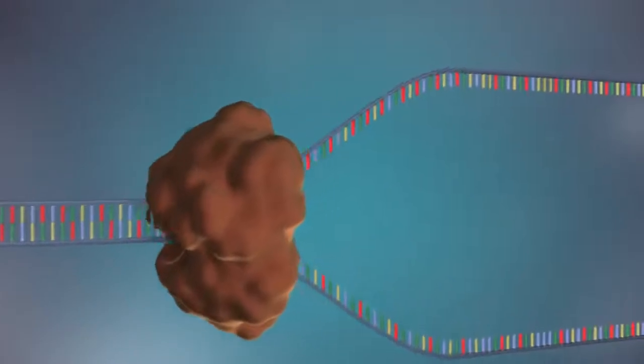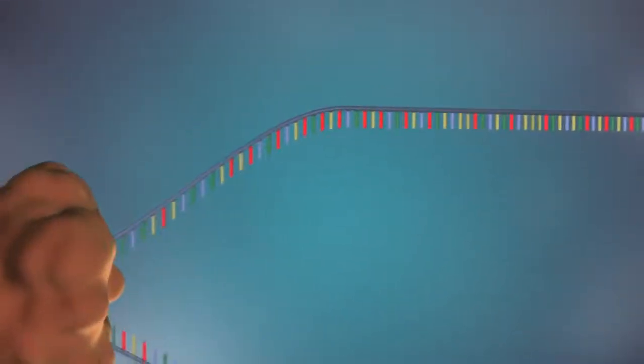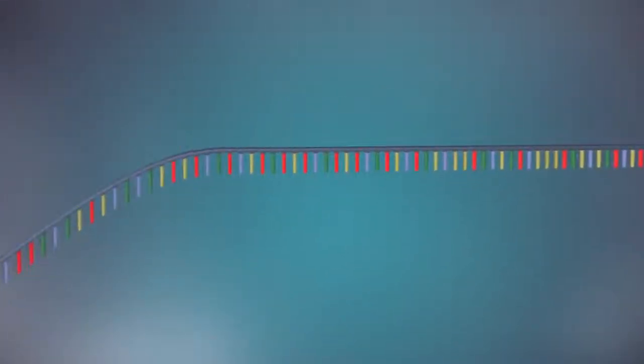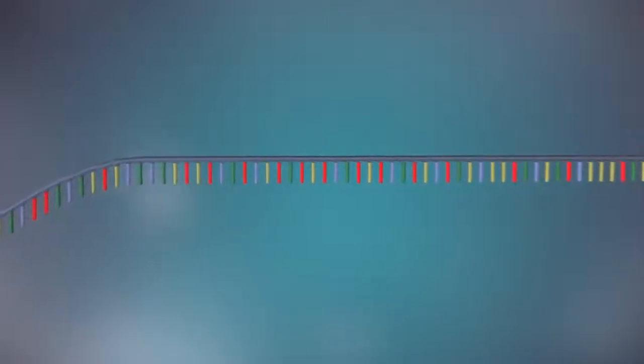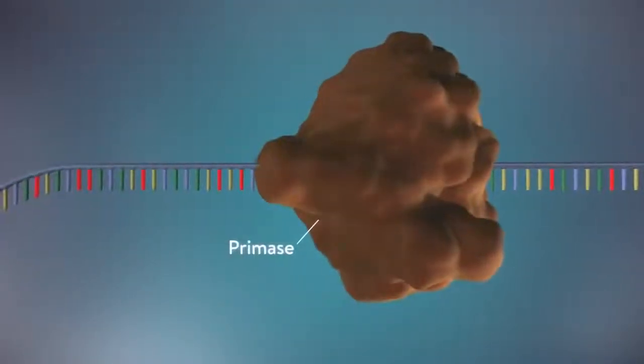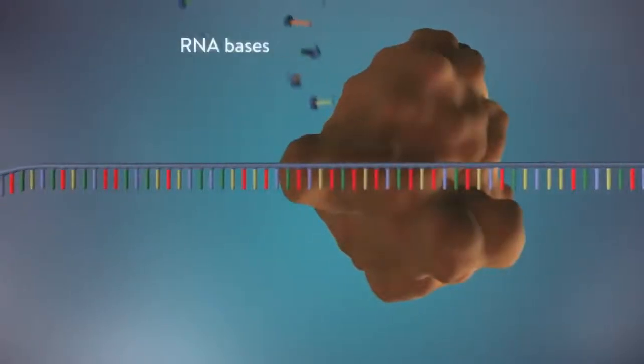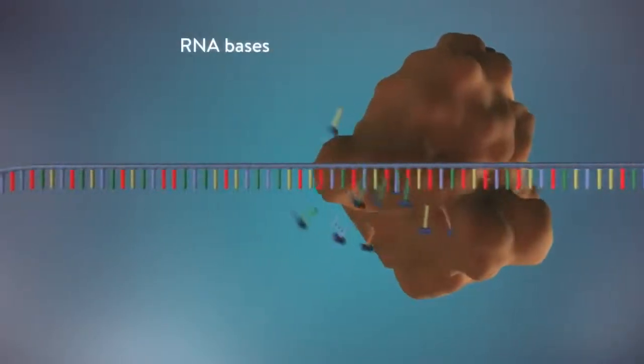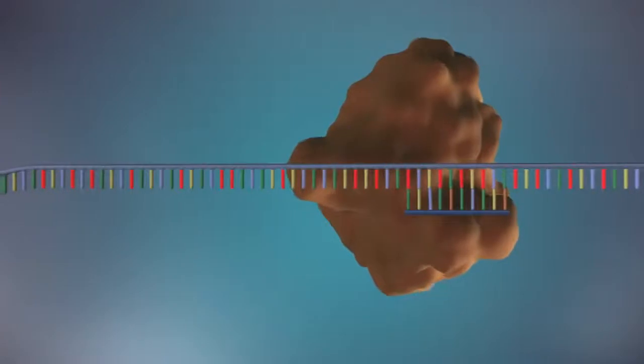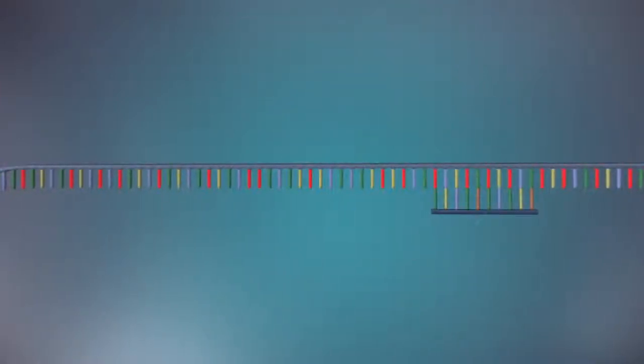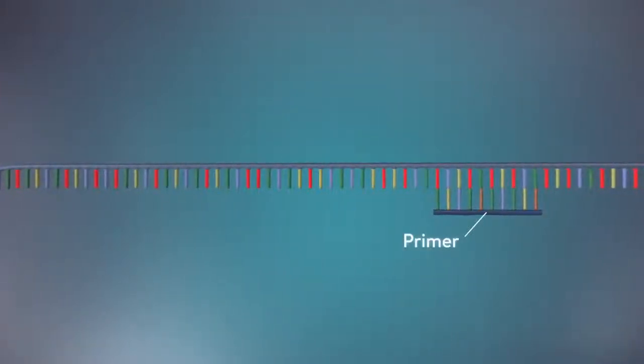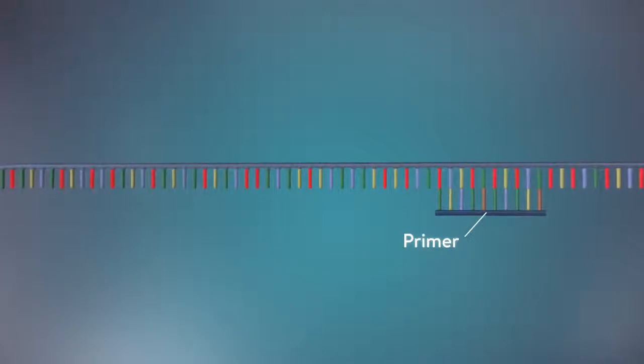The separated strands each provide a template for creating a new strand of DNA. An enzyme called primase starts the process. This enzyme makes a small piece of RNA called a primer. This marks the starting point for the construction of the new strand of DNA.